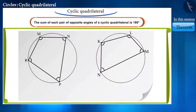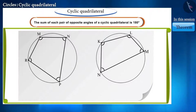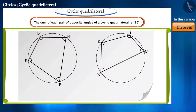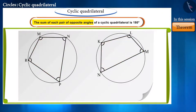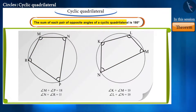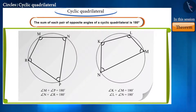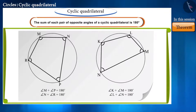You can repeat this activity with most cyclic quadrilaterals. This is a theorem that states that the sum of each pair of opposite angles of a cyclic quadrilateral is 180 degrees. We can also prove it mathematically — let's prove it.